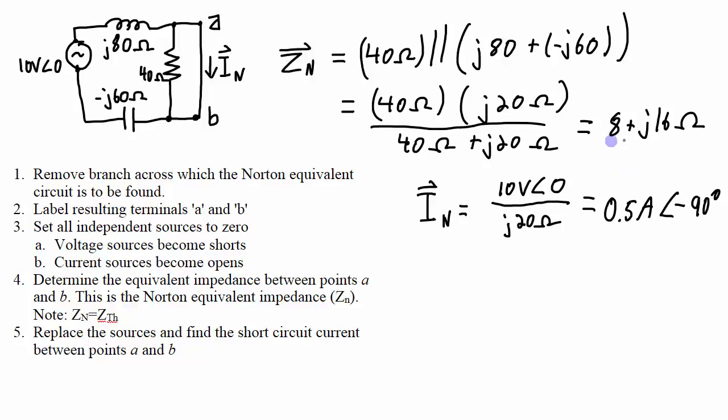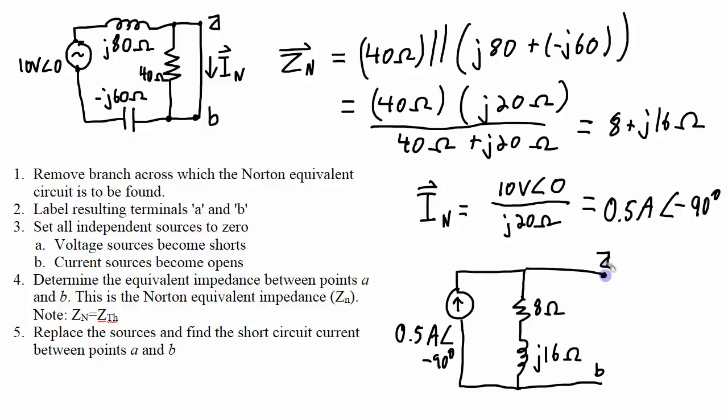So I've got the Norton equivalent impedance and the Norton equivalent current. So this circuit can be redrawn as this equivalent circuit. I've got the Norton equivalent, where the source is 0.5 amps with a phase angle of minus 90 degrees in parallel with an 8 ohm resistor and a J16 ohm inductor. These are my two points A and B, and these are what is connected to the load.